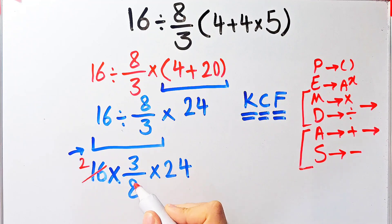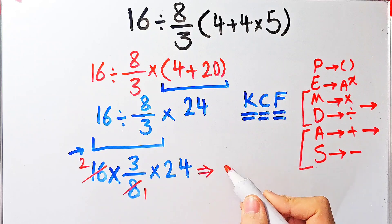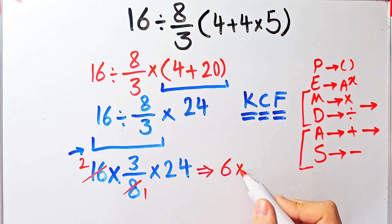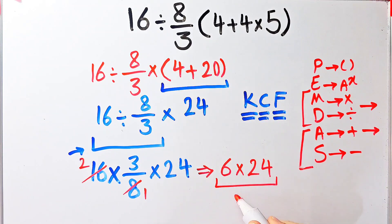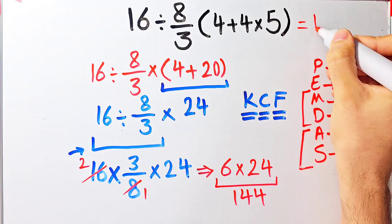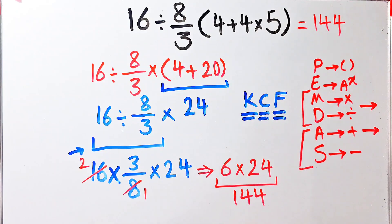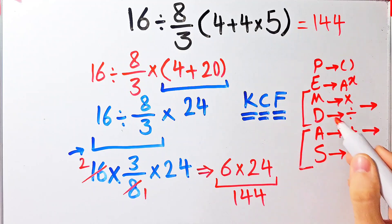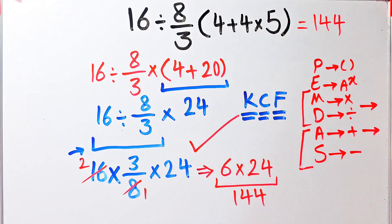Now we have 2 times 3, which equals 6, then times 24. 6 times 24 equals 144. The final answer of this question equals 144. If you want to get the right answer you need to follow the PEMDAS rule. Thanks for watching guys — to see more math videos, subscribe to the channel.